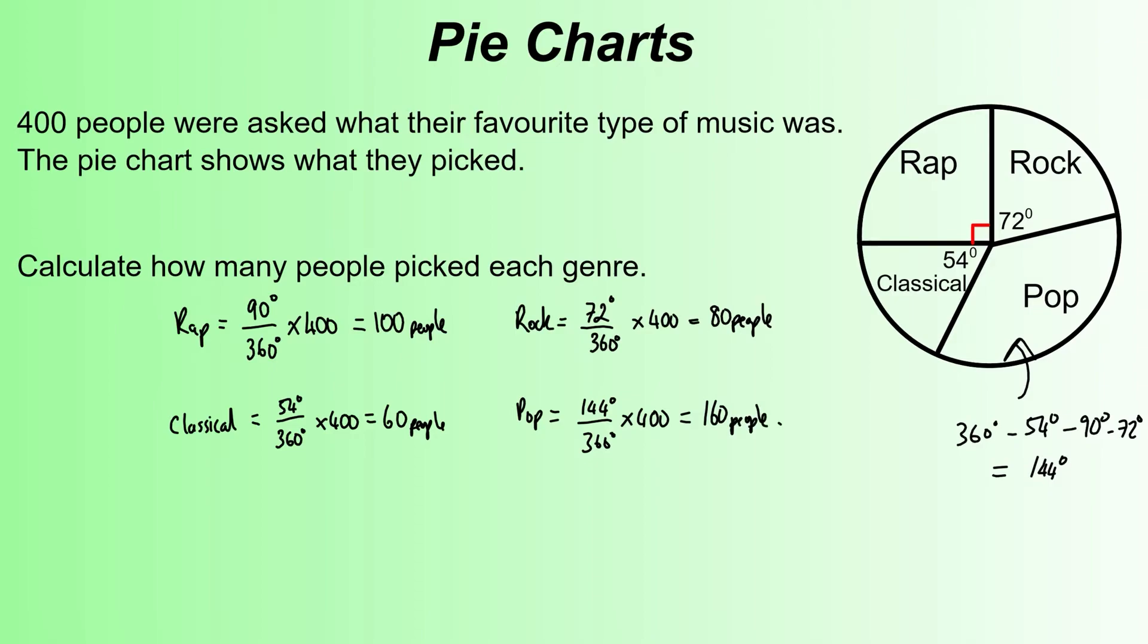If you add all these totals up they do add to give you 400, so the full pie chart, all the numbers you get should add up to the 400, the total number of people who took part in the survey.